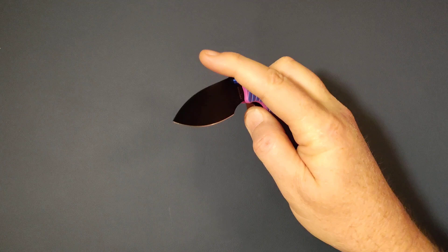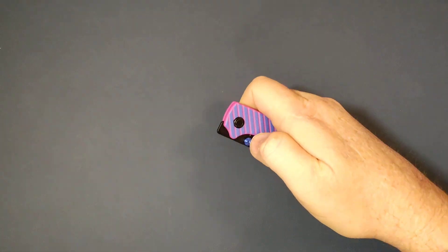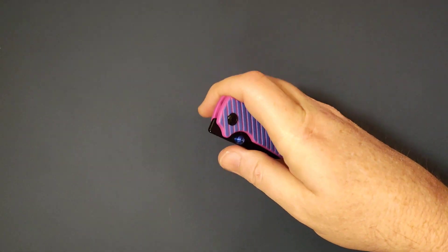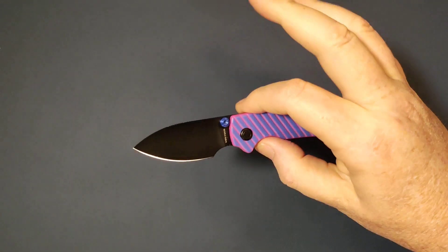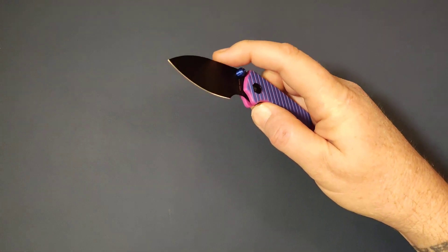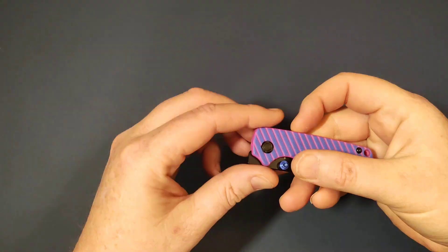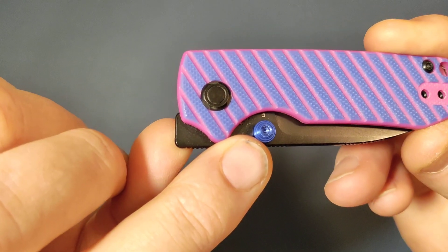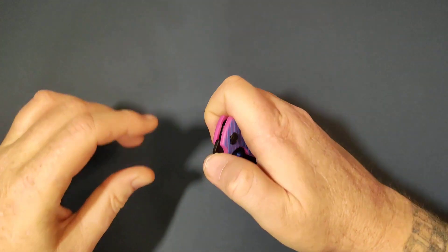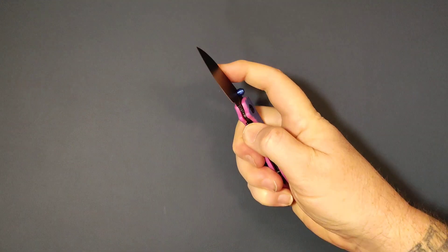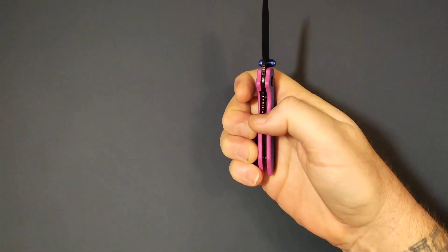It's awesome to deploy. You've got your thumb stud. It is super snappy by the way. Can you hear that? Snappy as all get out. And if you don't like the thumb studs, which are awesome blue anodized by the way, loving on those, if you don't like that you've got your front flipper.